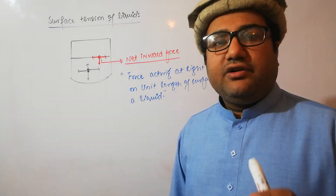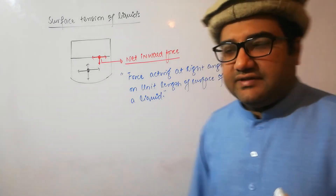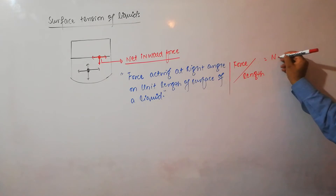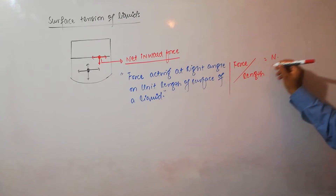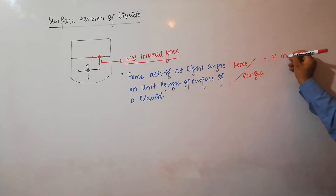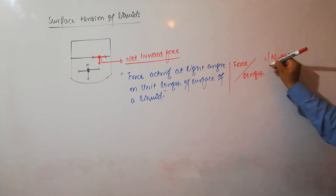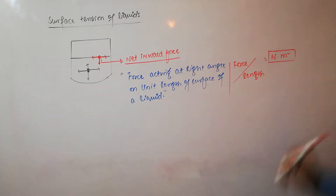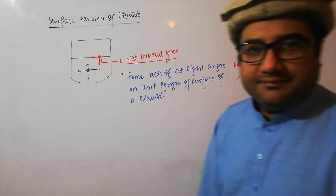From this definition we can draw the units of surface tension. The unit of force is Newton in SI, and length is meter, so the first unit of surface tension is Newton per meter (N/m).